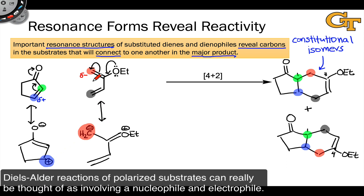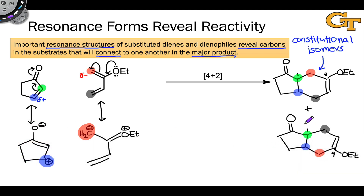These alternative resonance forms reveal where the nucleophile and electrophile are in this Diels-Alder reaction. Despite involving cyclic electron flow, we can absolutely think of this reaction as the combination of a nucleophile with an electrophile. To form the major product, the nucleophilic and electrophilic carbons will link up — the ones with partial positive and partial negative charge will be attracted to one another.